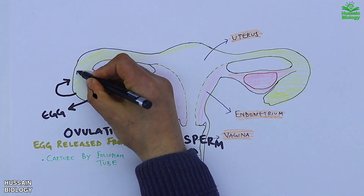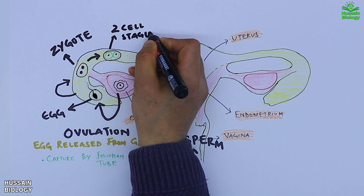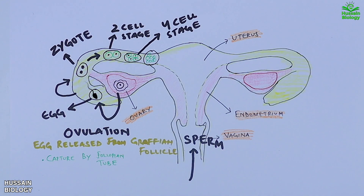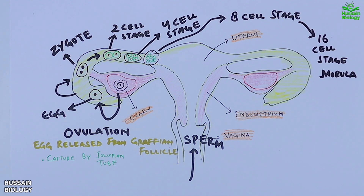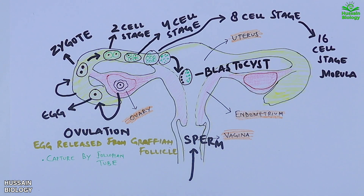After fertilization we get the zygote, which is then cleaved into two cells — the two-cell stage — followed by the second cleavage into four cells, followed by the third cleavage into eight cells, and then finally these eight cells are cleaved into sixteen cells called the morula. Then from here it transitions into a blastocyst with inner cells and outer cells, but blastocyst formation is not part of cleavage so it won't be discussed here.